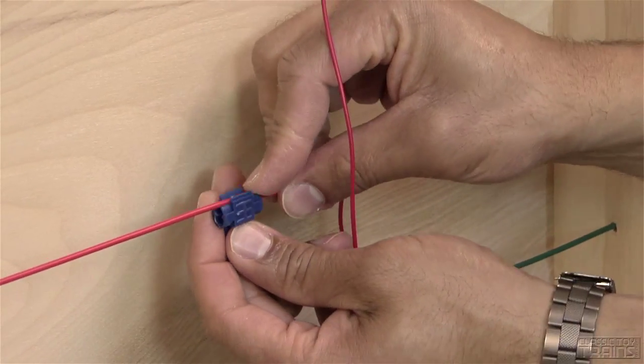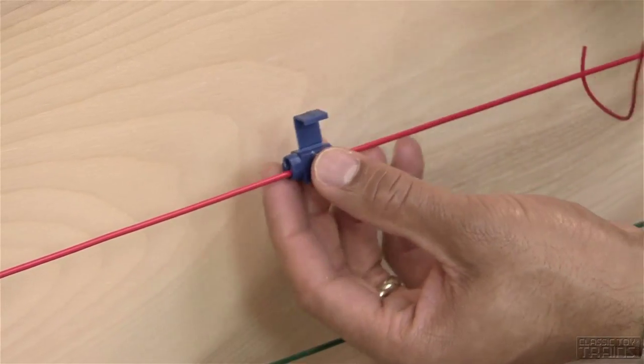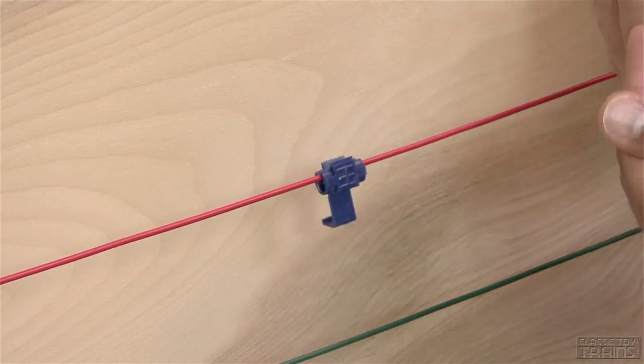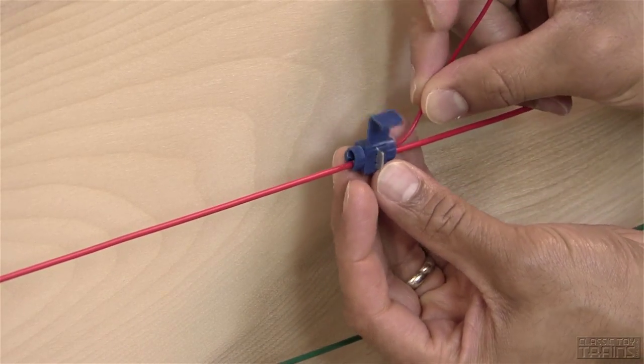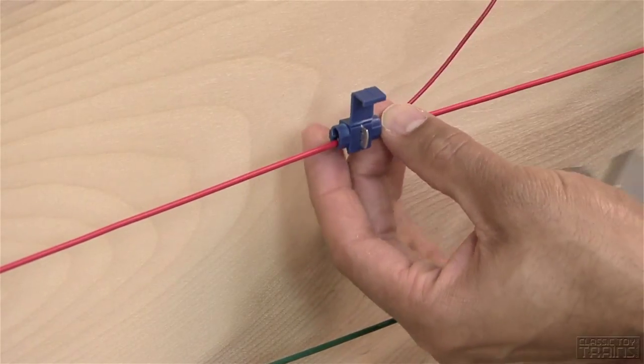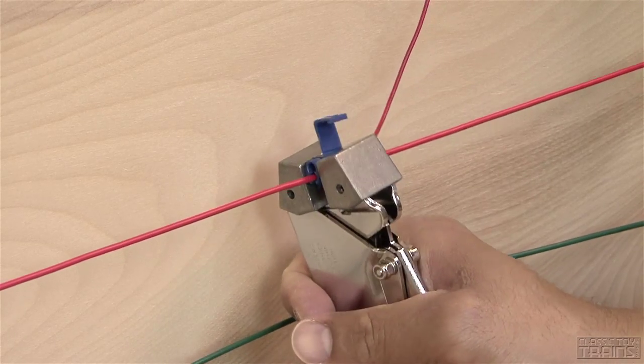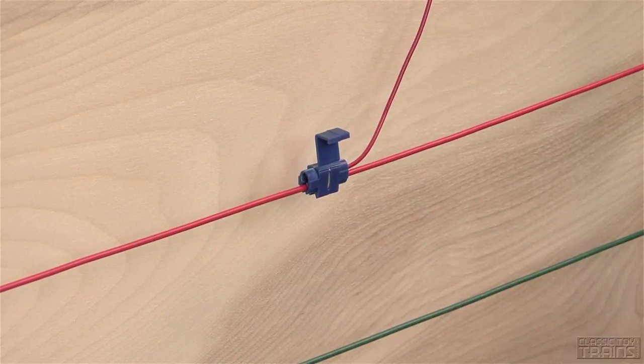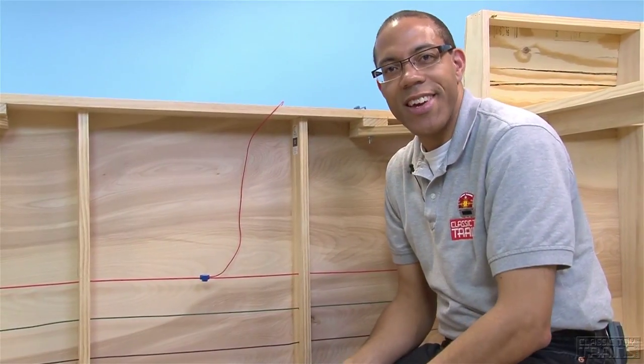basically you just need to first fasten the tap splice connector onto the bus wire and then I have a feeder wire that I will insert into the tap splice connector and use my crimping tool to lock it into place and then simply close the connection. That's all it takes.